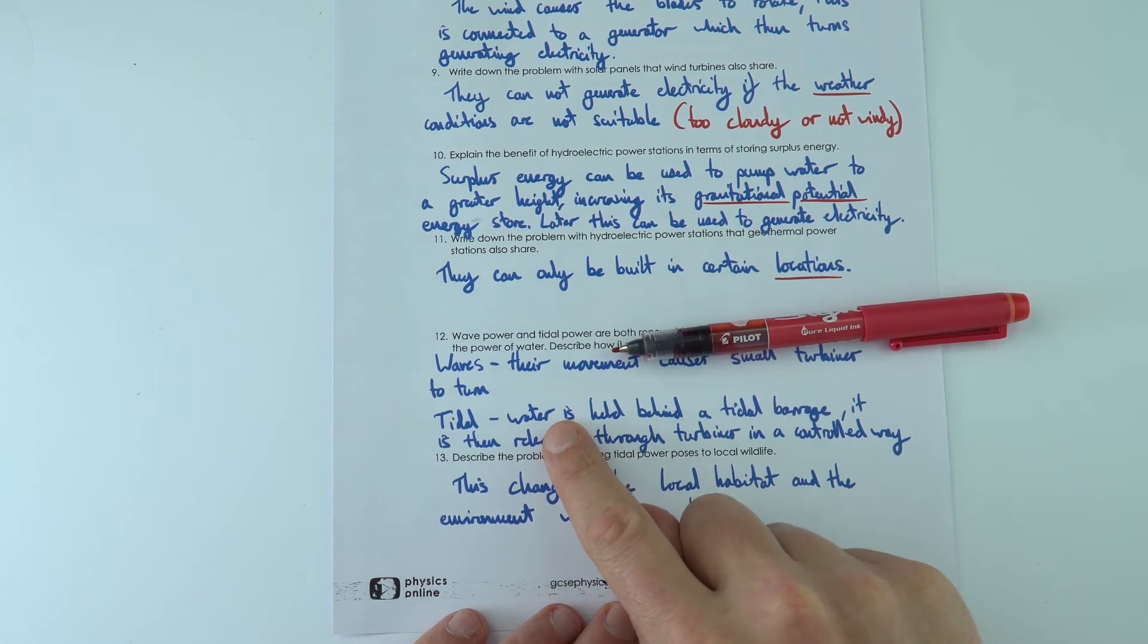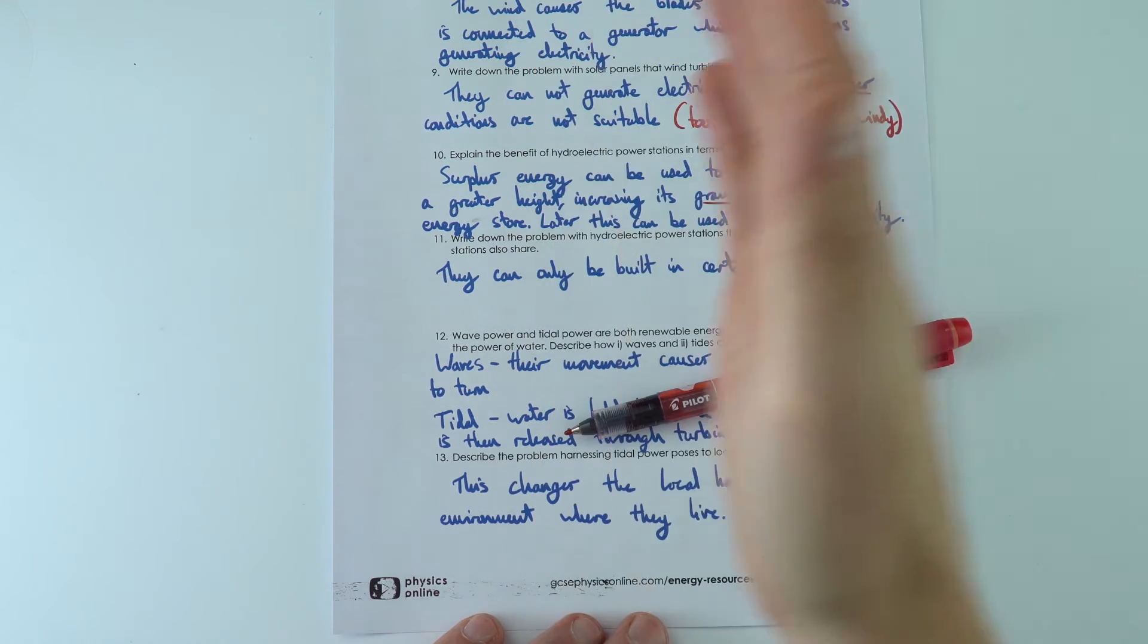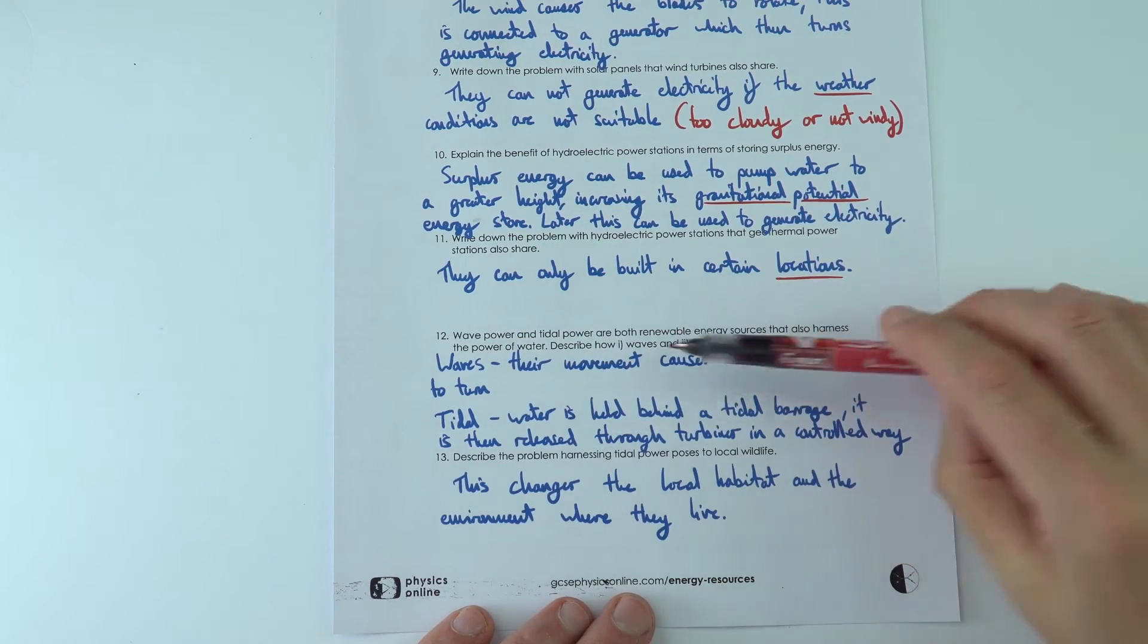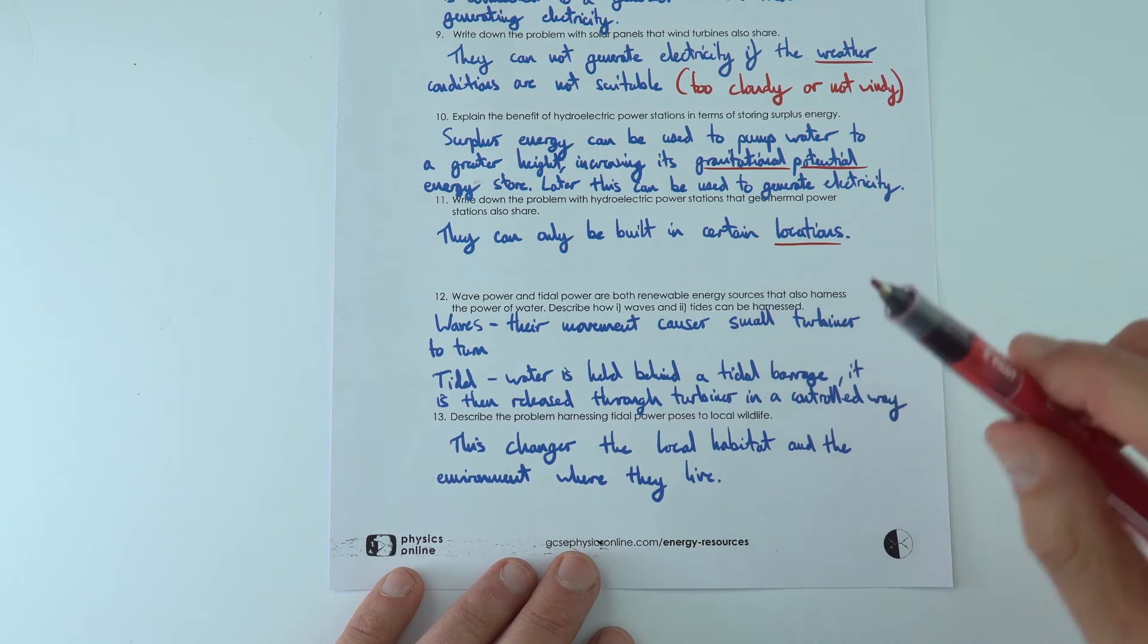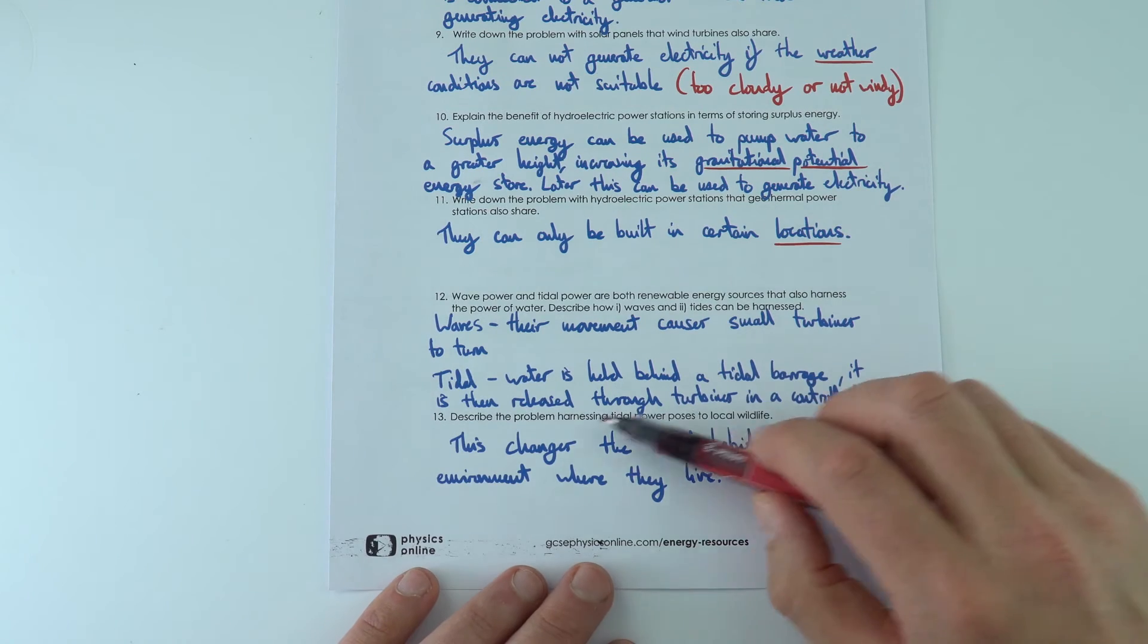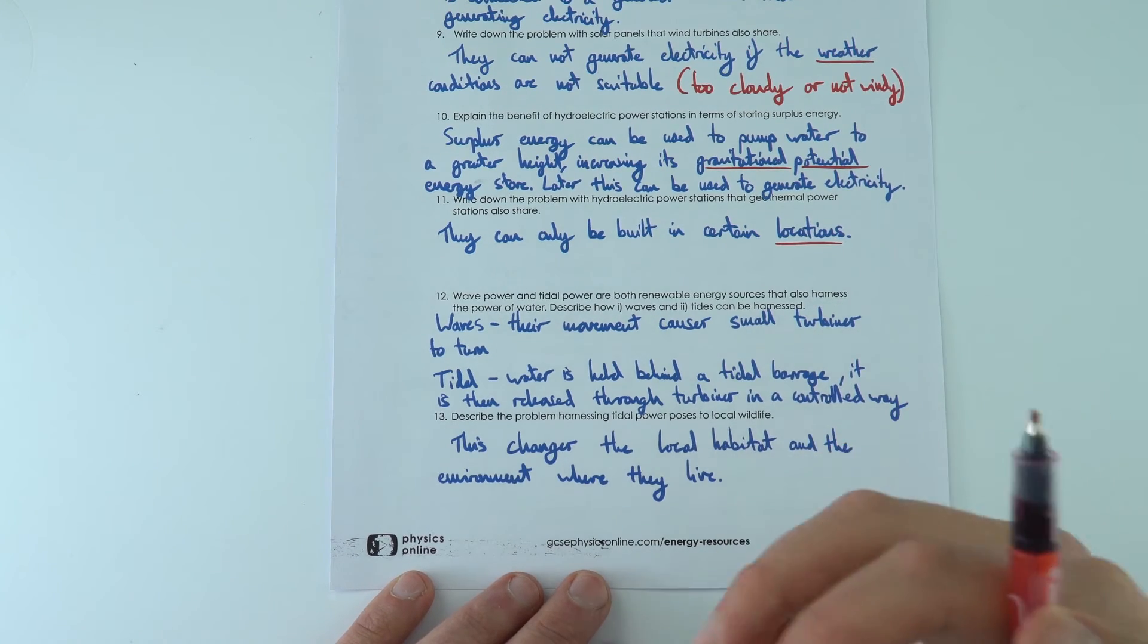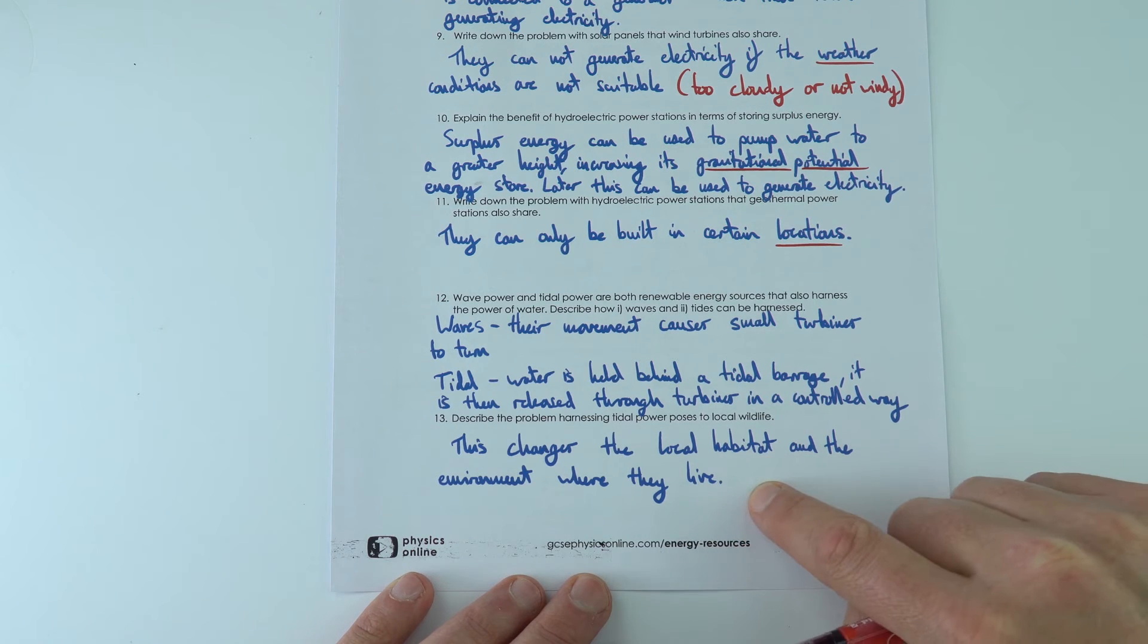So tidal, it can only be built in certain locations, and what we do is we hold the high tide back from the sea and we let it out in order to turn turbines which cause generators to turn to then generate electricity. The problem with tidal power is that we're changing the local habitat. Things might be flooded and where lots of maybe seabirds normally nest, that land has changed its use, and that's going to have a big effect on the local habitat and the local environment where the wildlife lives.